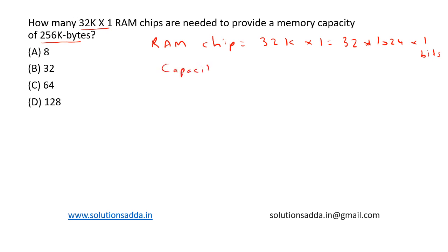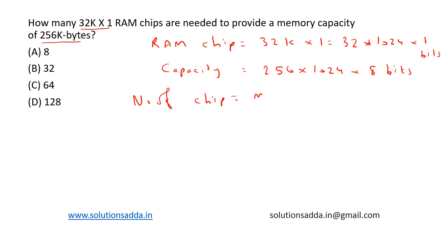The capacity required is equal to 256K, which is equal to 256 into 1024 into 8 bits. The number of RAM chips is equal to memory capacity divided by RAM chip capacity.